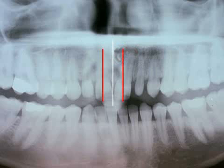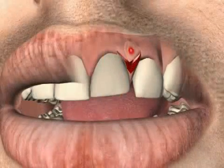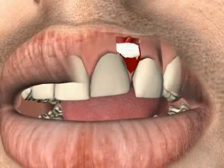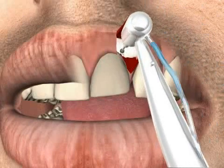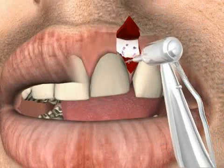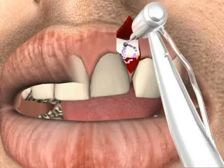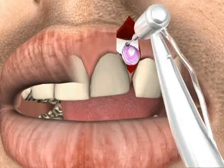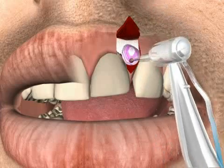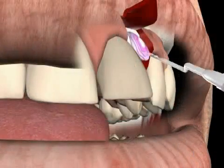The cyst then pushed the tooth away from the middle. In this case the treatment consists of the removal of the cyst. The mucosa has already been carefully folded to one side. Now the bone above the cyst will be removed carefully. The entire cyst pod can now be seen. Next, the cyst is spooned out by means of a specific instrument.